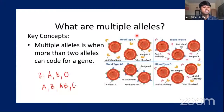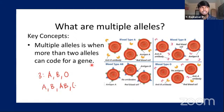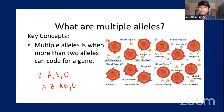Regarding multiple alleles from the picture: multiple alleles occur when more than two alleles can code for a gene. The example for multiple alleles is blood groups, which are decided by three alleles.